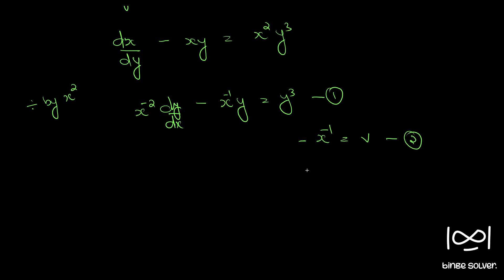We get x raise to minus 2 dx by dy equal to dv by dy. Call this equation 3.